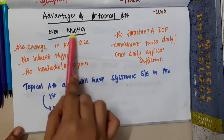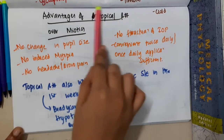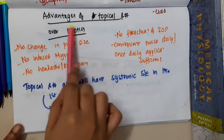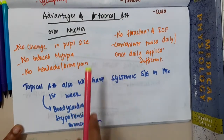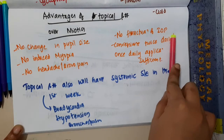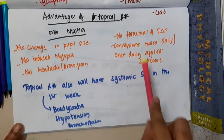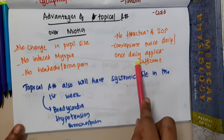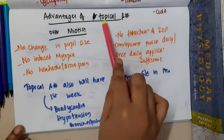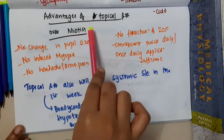Topical beta blockers do not cause change in pupil size — miotics will cause miosis. These topical beta blockers will not induce myopia, whereas miotics may. Topical beta blockers do not cause headache, and there is no fluctuation of intraocular pressure. They can be used with once daily or twice daily application.